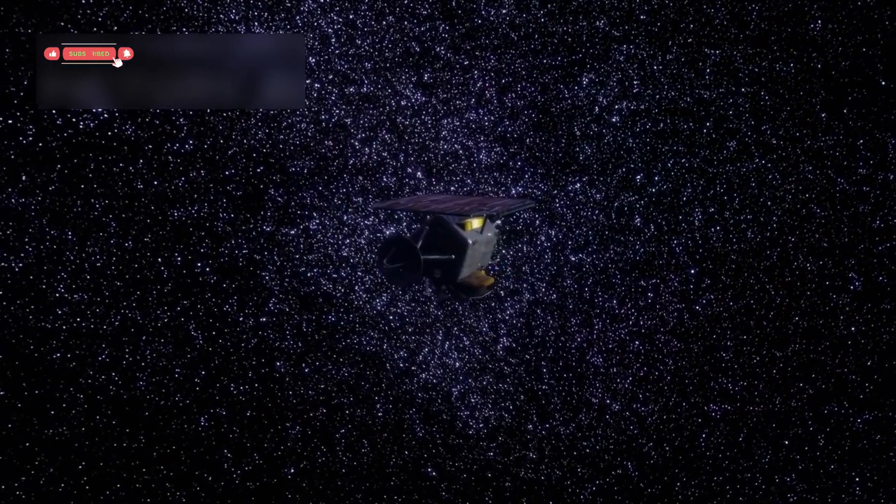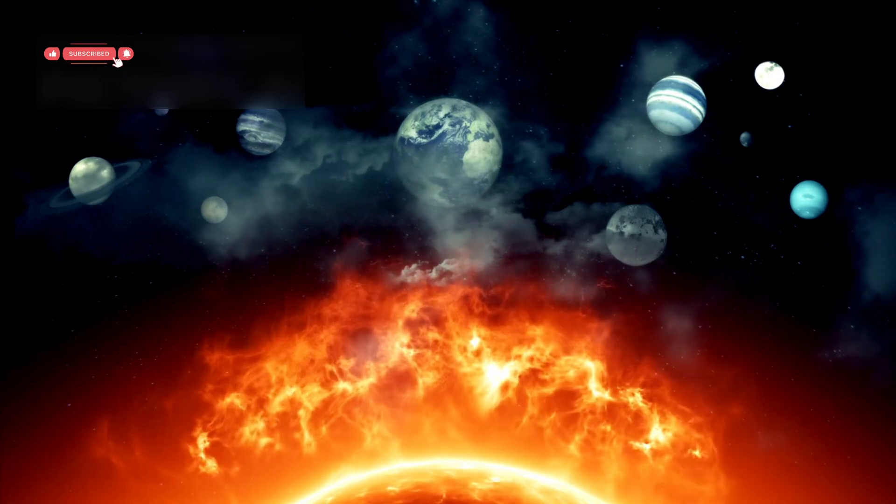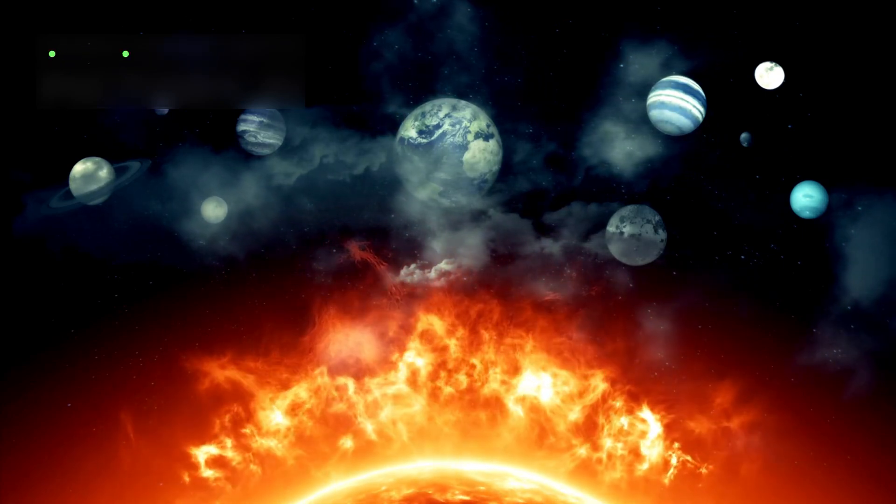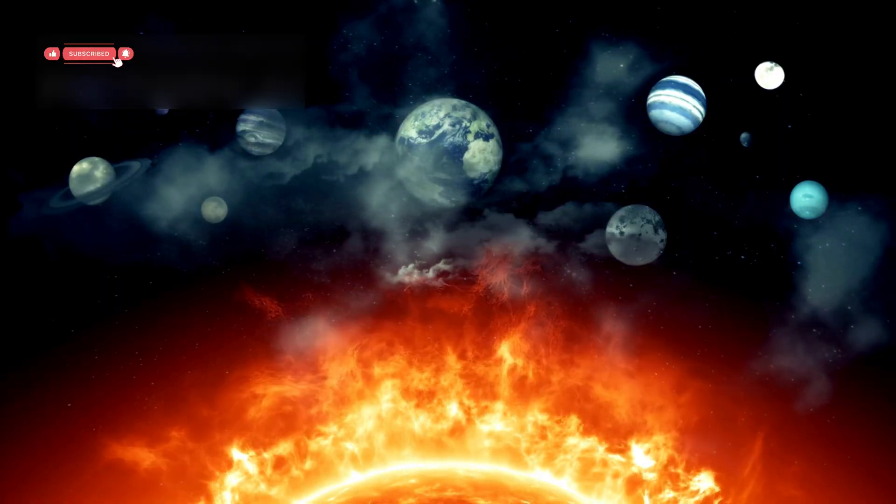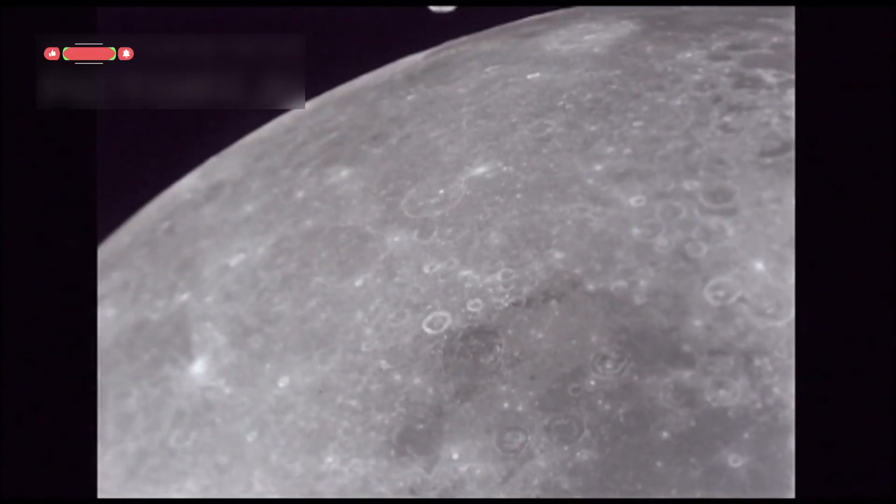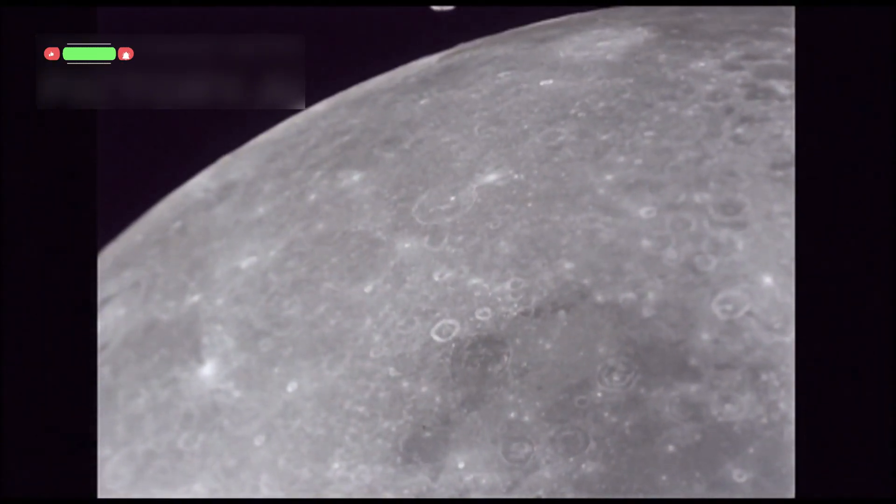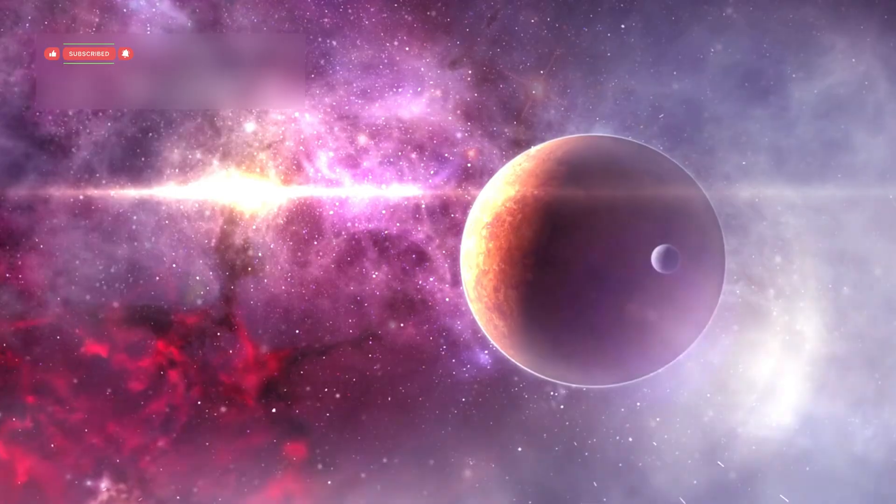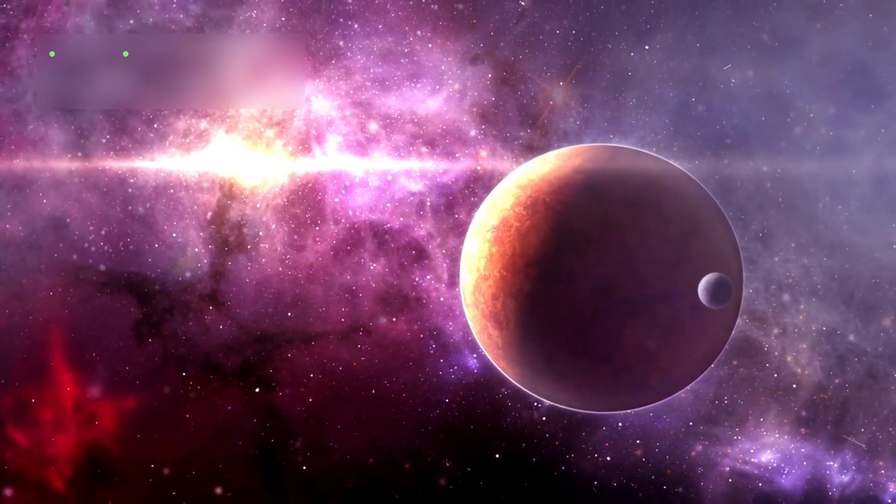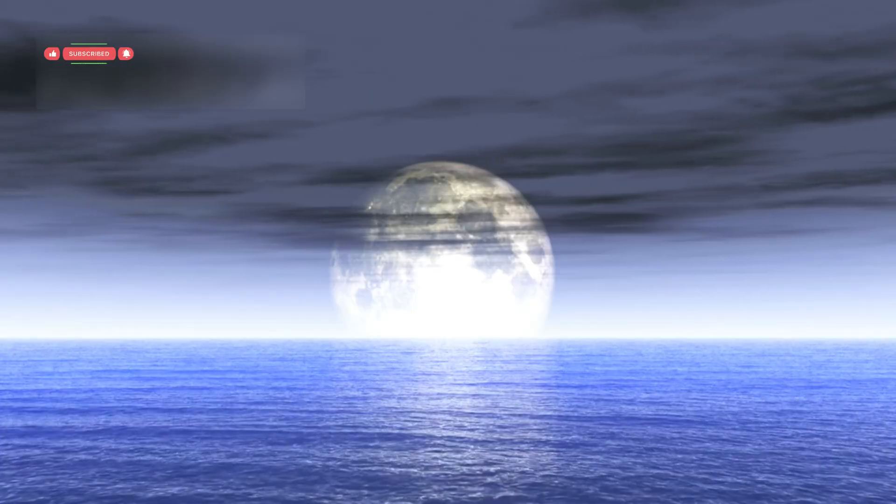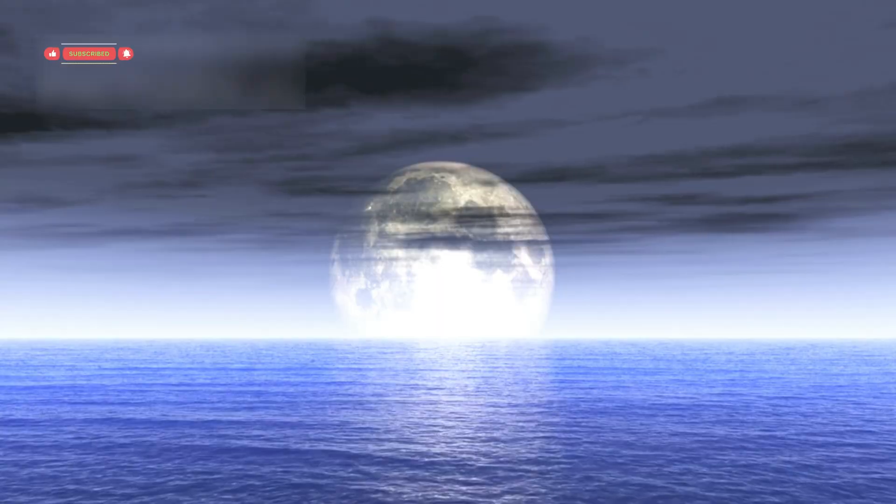The legacy of the Voyager mission is immense. It has changed how we understand the solar system and inspired generations of scientists and engineers. Before Voyager, many of the planets and moons were just dots in the sky. By the end of the mission, images and data from the Voyagers had rewritten textbooks around the world. We learned that moons thought to be dead could be active and even have oceans under ice.